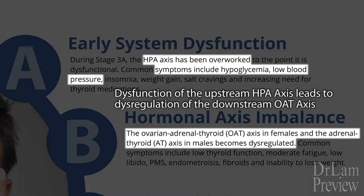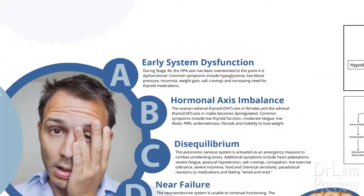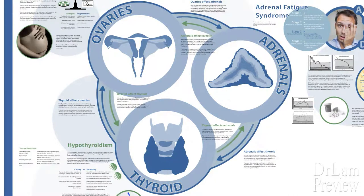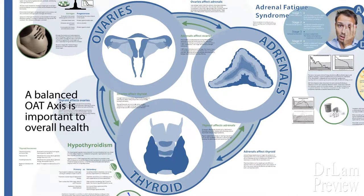We will go into the OAT axis first. It's important to understand that while we concentrate more on the OAT axis in women, the application is the same for males, except that you take away the ovarian system — though men can still have low libido. Taking a step back, the ovarian system, the adrenal system, and the thyroid system need to be well balanced. They are like a three-legged stool — you cannot safely sit on it unless all three are in good balance.